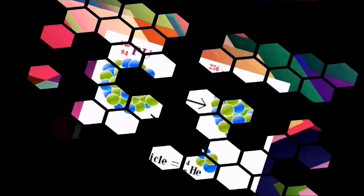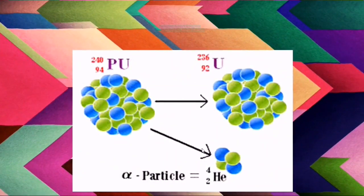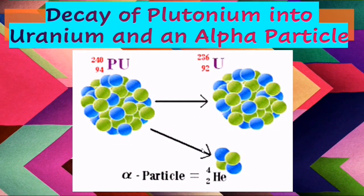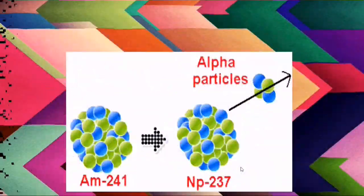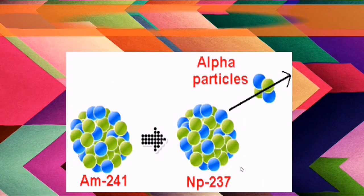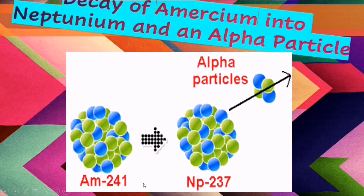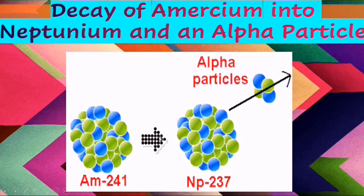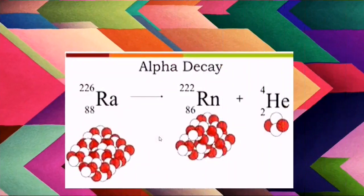The second example of alpha decay is the decay of plutonium into uranium and an alpha particle. Similarly, Americium-241 is converted into Neptunium-237 by emitting an alpha particle — another example of alpha decay.